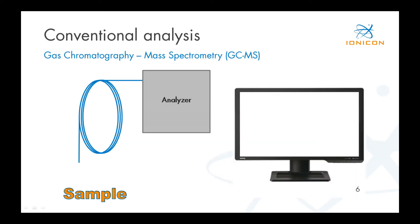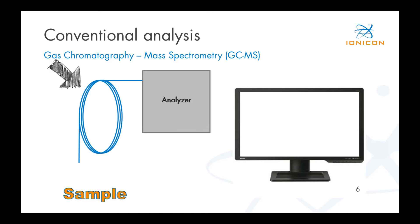Let's talk about the principle behind PTRMS. You're familiar with conventional analysis — the gold standard is gas chromatography mass spectrometry, abbreviated with GCMS. It works like the following: you have a sample, you have a GC column, and you have an analyzer, and this is your computer screen where you will get the result.